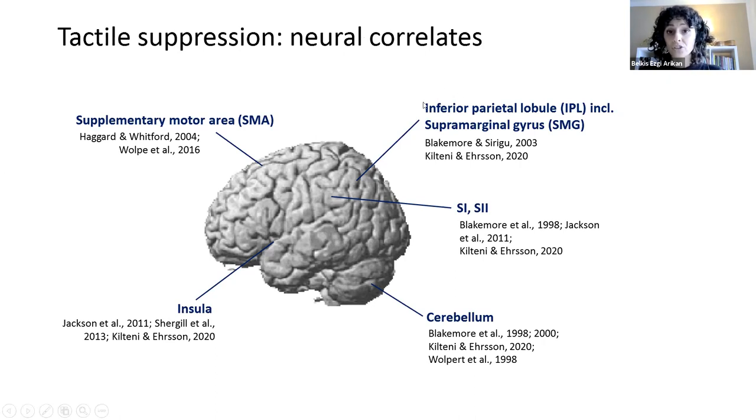Also, deactivations have been found in the posterior parietal cortex, including the inferior parietal lobule, the supramarginal gyrus, as well as the cerebellum. And these are areas that are strongly linked with the prediction and monitoring of movement-related somatosensory signals.